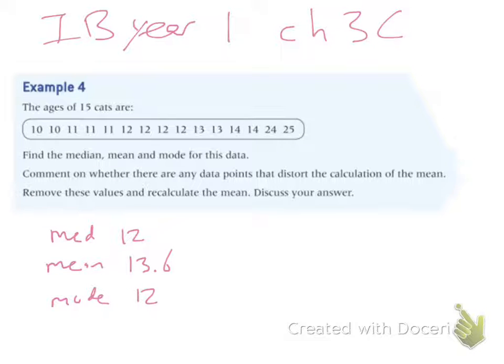So I used a calculator to figure all three of those out. And then it says, comment on whether there are any data points that seem to distort your calculations. I think if you look at that list,